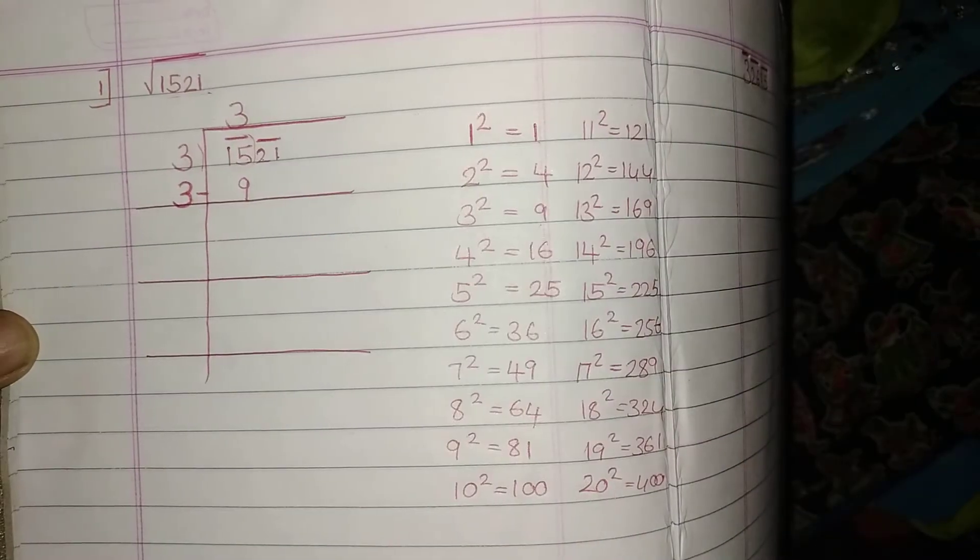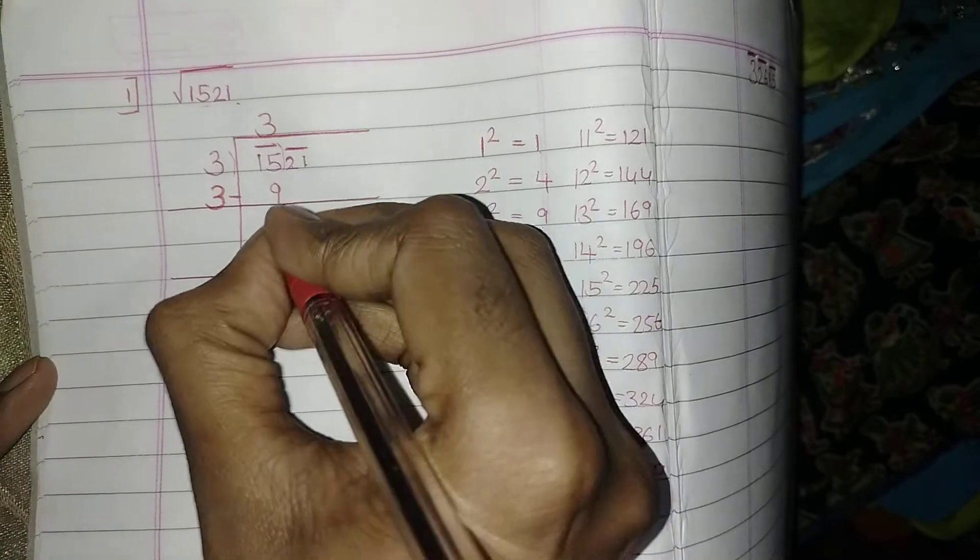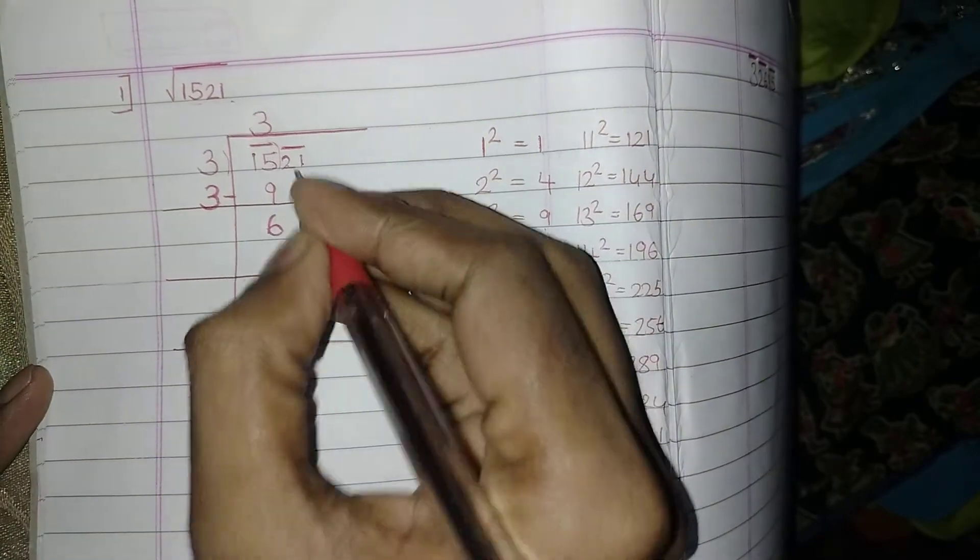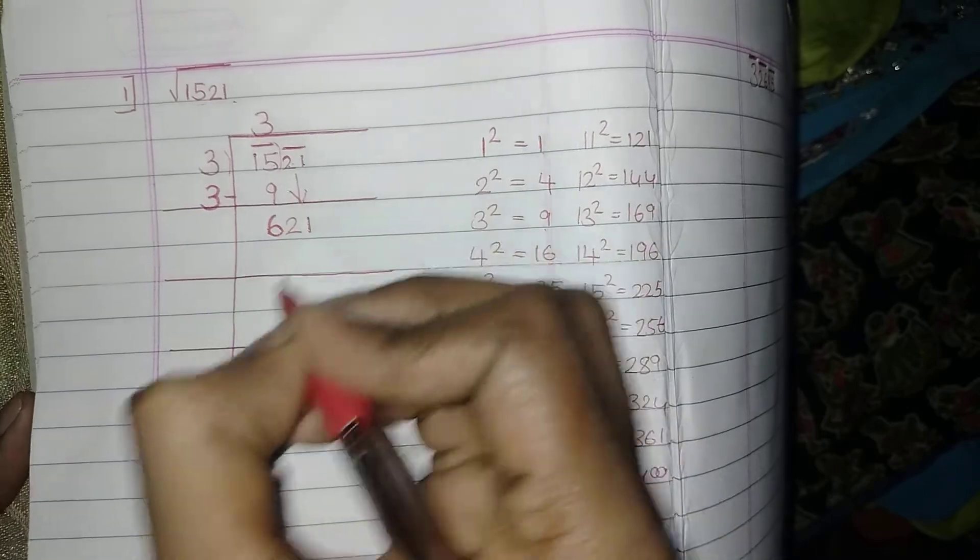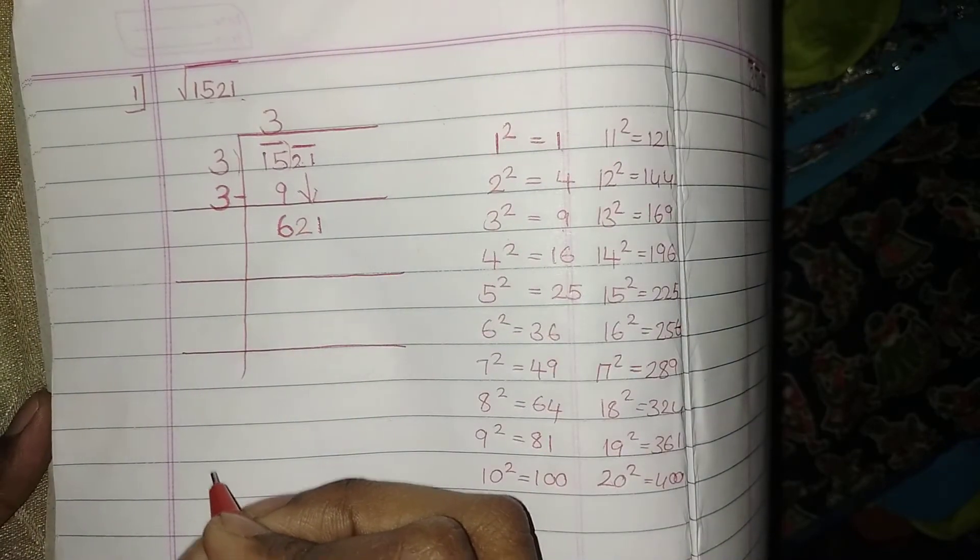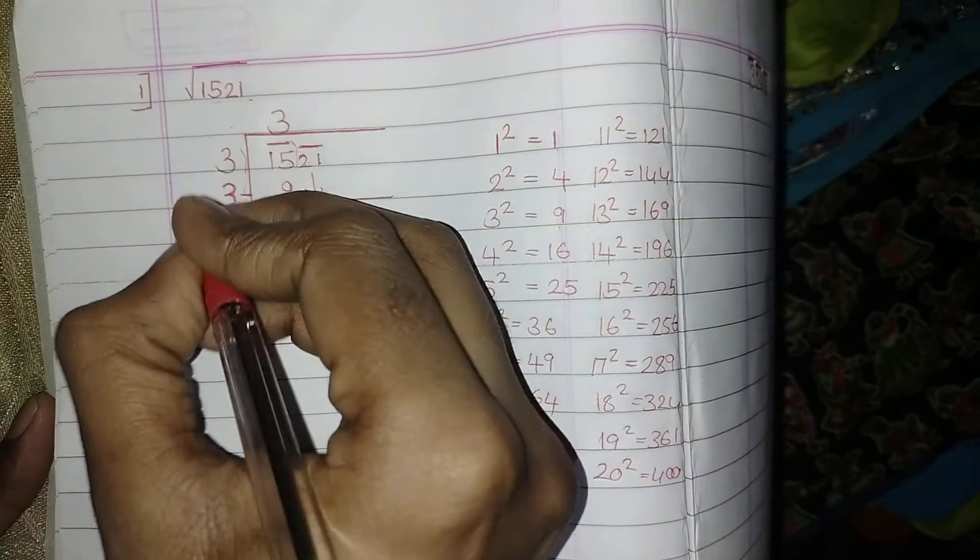Now you subtract this group: 15 and 9, what is 15 minus 9? It is 6. So 15 minus 9 is 6. After writing 6, bring back the next group, that is 21.